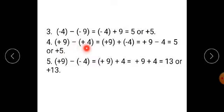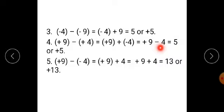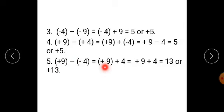Fourth example: plus 9 minus plus 4. Signs are different, so ignore the sign. 9 minus 4 gives you 5, and the sign of the bigger number is plus, therefore plus 5. Fifth example: plus 9 minus minus 4. Add the opposite of minus 4, which is plus 4. Therefore, 9 plus 4 gives you 13, or plus 13.